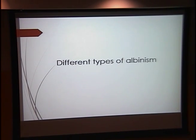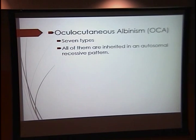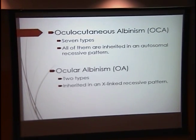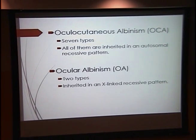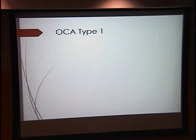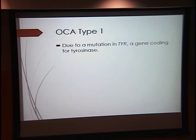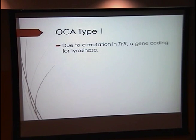There are several different types of albinism. The first is oculocutaneous albinism, which has seven main types, all inherited in an autosomal recessive pattern. OCA type 1 is due to a mutation in the TYR gene, with over 200 known mutations. It codes for tyrosinase, the enzyme responsible for converting tyrosine to DOPA, and DOPA to dopaquinone, which are part of the pathway in the formation of melanin.